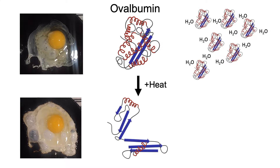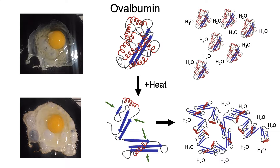Ovalbumin now looks like this cartoon diagram at the bottom, and one thing about this diagram is that it has exposed hydrophobic surfaces. Think of where these green arrows are pointing as places that do not want to interact with water. So if you have a bunch of proteins with exposed hydrophobic surfaces, rather than interact with water molecules, they interact with each other — hiding those surfaces from the water. They form aggregates that exclude water on all sides. As we cook the egg, we also evaporate some water. So protein aggregation plus less total water together make our egg white turn into a solid.